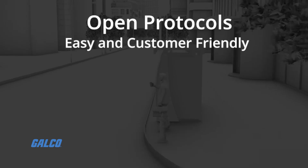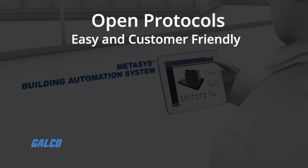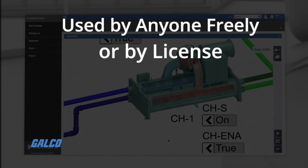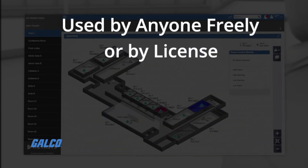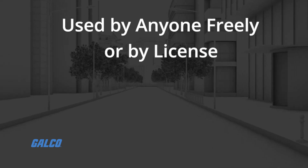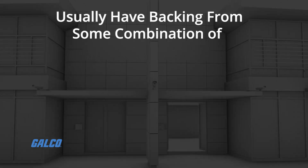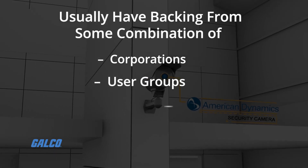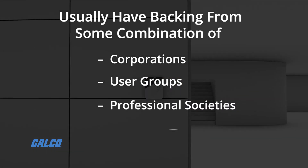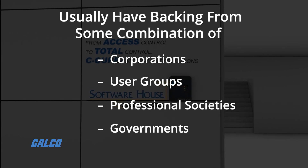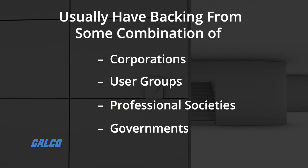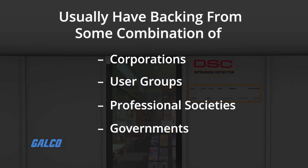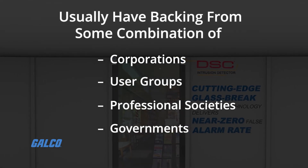Open protocols are easy and customer friendly. They can be accessed and used by anyone freely or by license, and their characteristics are published. Open protocols usually have backing from some combination of corporations, user groups, professional societies, and governments. Some of these are regional or global, each with their own set of specializations and capabilities that make them preferable in certain applications.